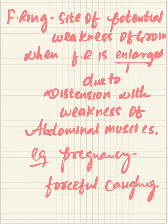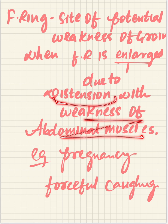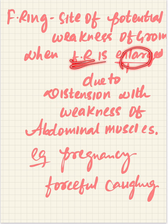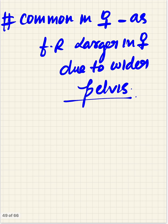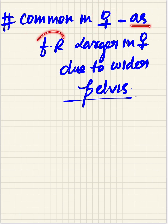Age, pregnancy, or forceful coughing increases intra-abdominal pressure, causing weakness of the abdominal muscles and distension or enlargement of the femoral ring. This acts as a site of potential weakness for protrusion of intestinal contents into the femoral ring, causing femoral hernia. Femoral hernia is most commonly seen in females because they have a larger femoral ring due to their wider pelvis.